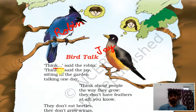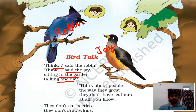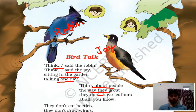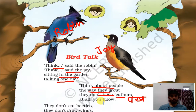Things said the Robin, things said the Jay, sitting in the garden talking one day. They both are talking and sitting in the garden. Think about people the way they grow — they don't have feathers. Feathers means 'pankh' — they don't have feathers at all, you know.